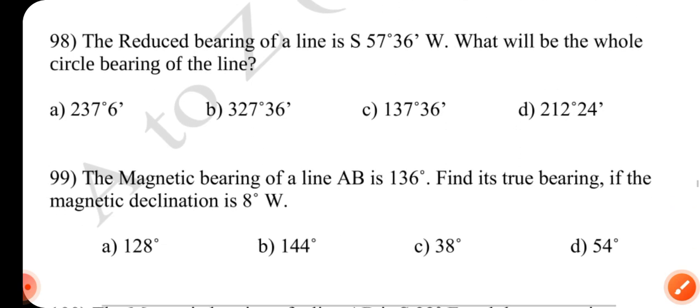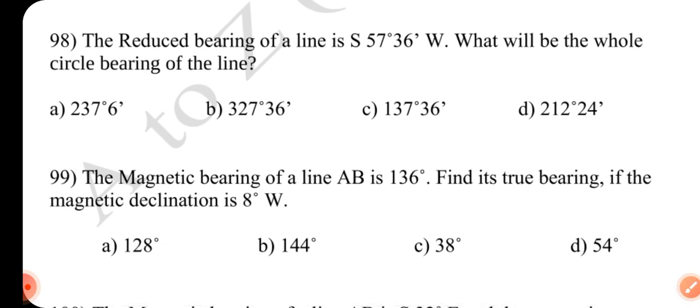Question number 98. The reduced bearing of a line is S 57 degrees 36 minutes west. What will be the whole circle bearing of a line? Answer is A 237 degrees 6 minutes.